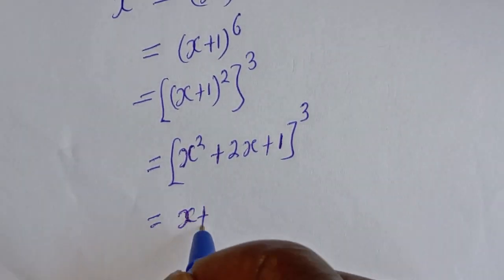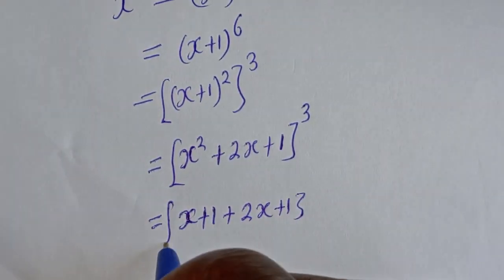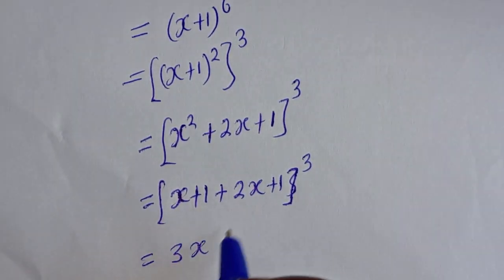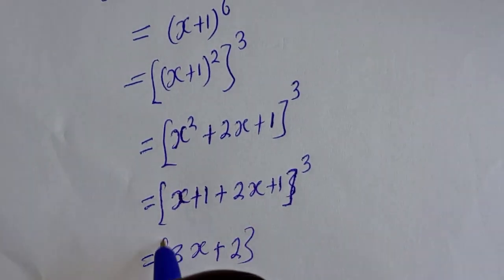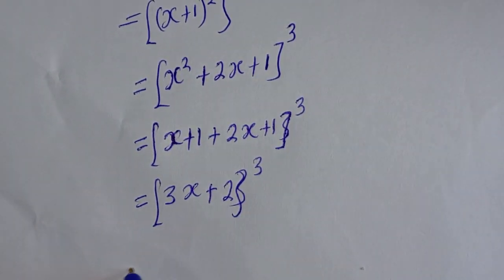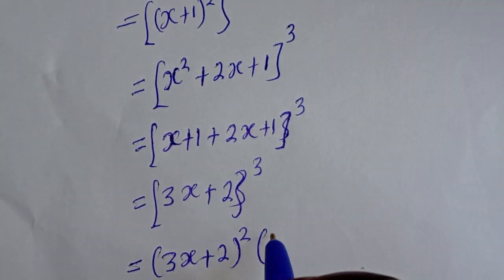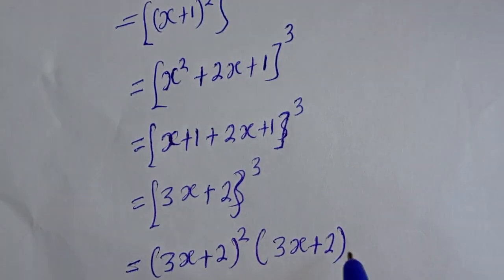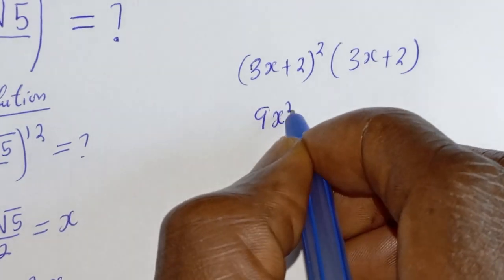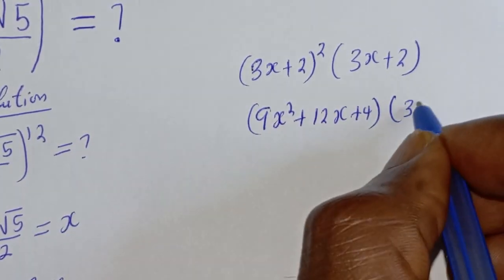Substituting x squared equals x plus 1, we get (x plus 1 plus 2x plus 1) to the power of 3, which simplifies to (3x plus 2) to the power of 3. Then (3x plus 2) to the power of 3 is written as (3x plus 2) squared multiplied by (3x plus 2). Expanding (3x plus 2) squared gives 9x squared plus 12x plus 4, multiplied by (3x plus 2).